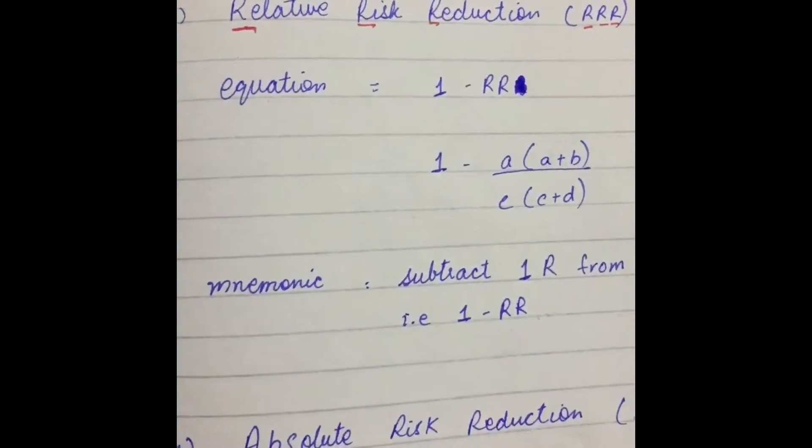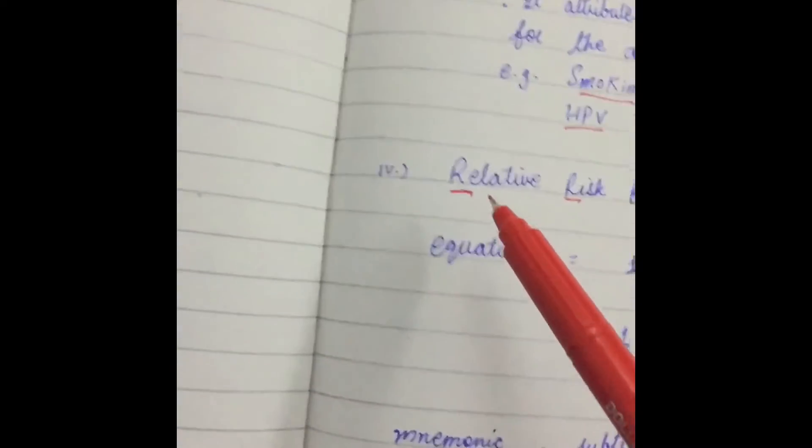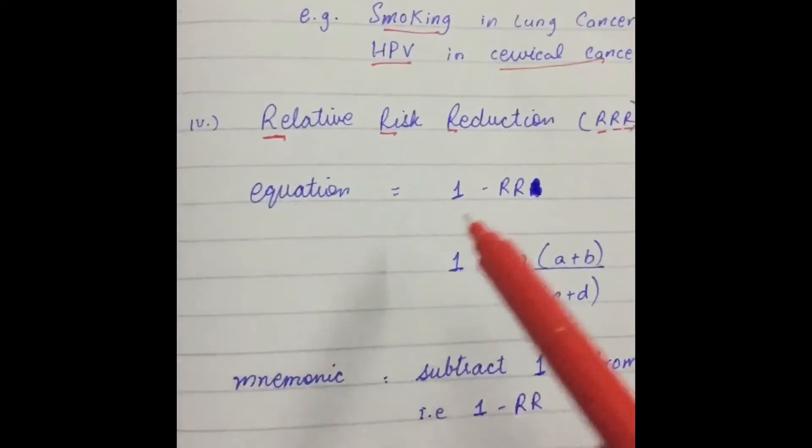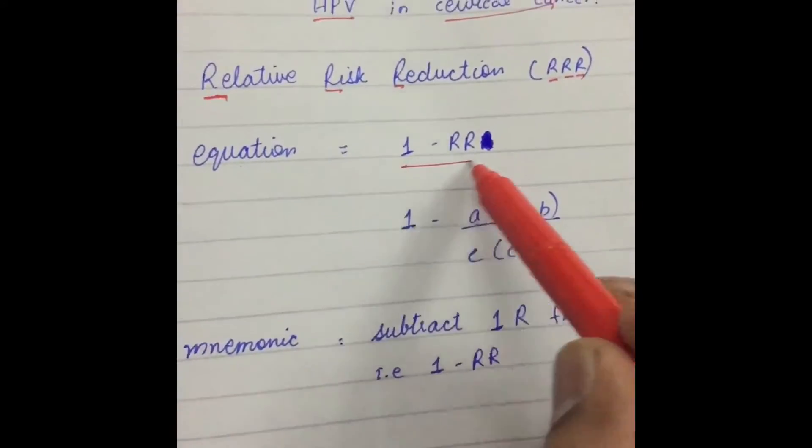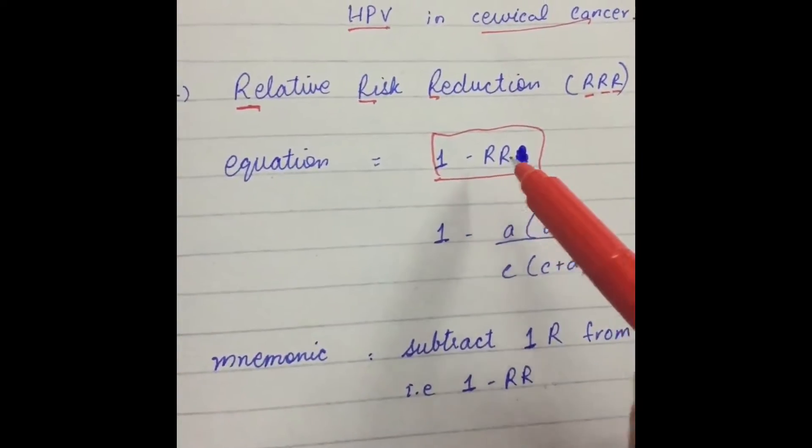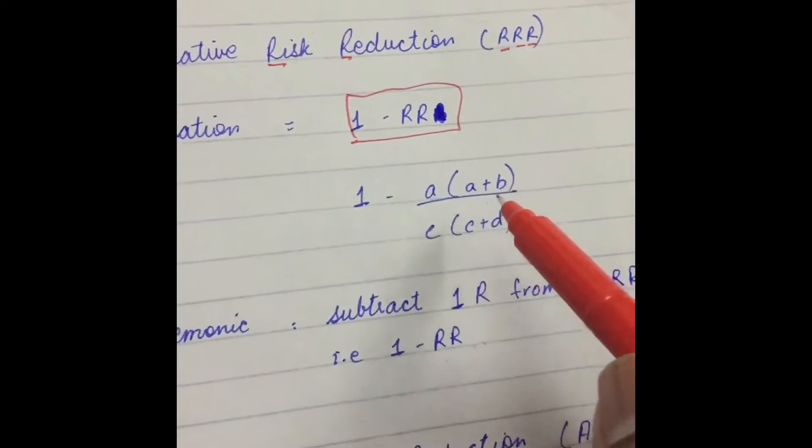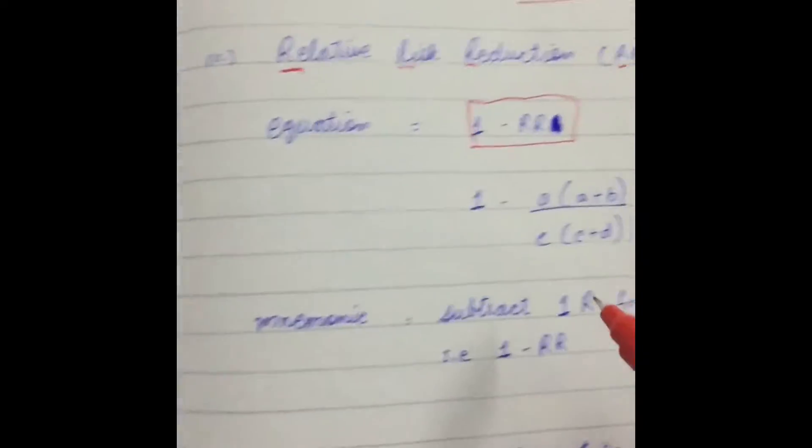Next is Relative Risk Reduction. R, R, R. Its equation will become as 1 minus RR, that is Relative Risk, and 1 minus A, A plus B, over C, C plus D.